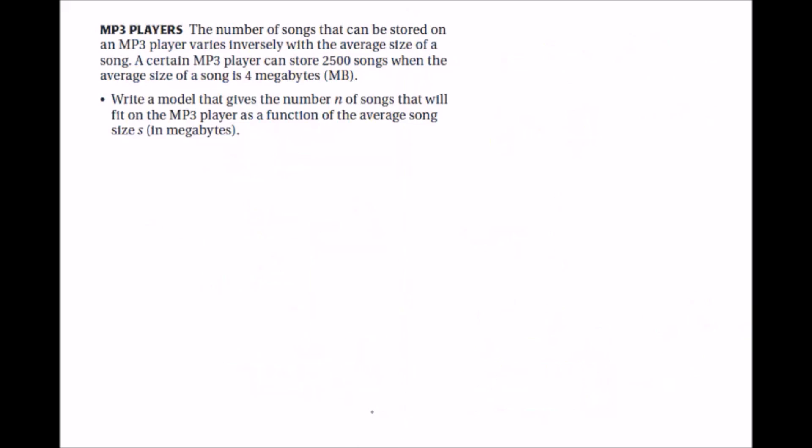Now let's look at a word problem example. It says the number of songs that can be stored on an mp3 player varies inversely with the average size of a song. A certain mp3 player can store 2,500 songs when the average size of a song is 4 megabytes. Write a model that gives the number n of songs that will fit on the mp3 player as a function of the average song size s in megabytes. So it makes sense that this mp3 player can hold less songs if the file sizes are larger. That's why this is inverse variation.